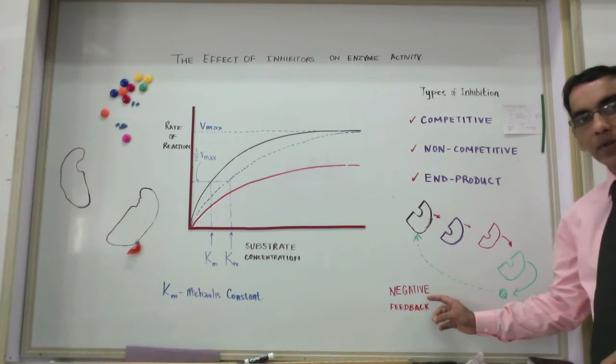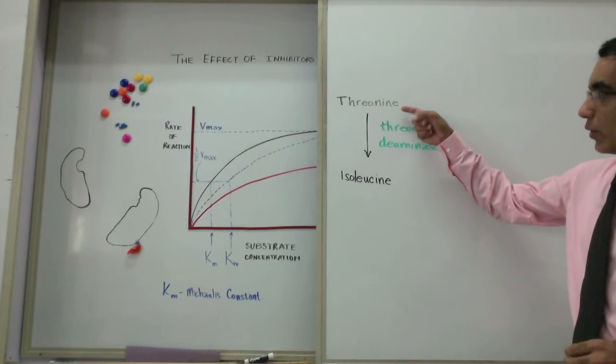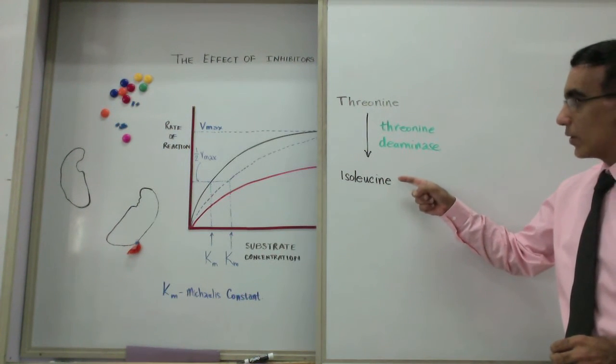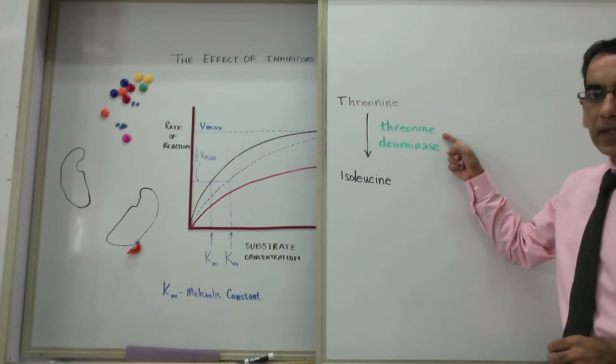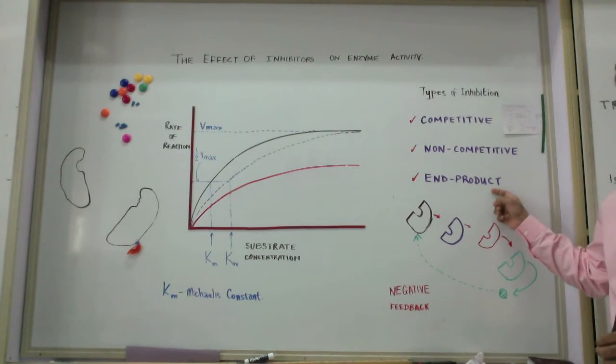This is an example of negative feedback. The amino acid threonine goes through a series of steps to form isoleucine. And isoleucine then acts as an inhibitor on threonine deaminase. This is an example of end product inhibition.